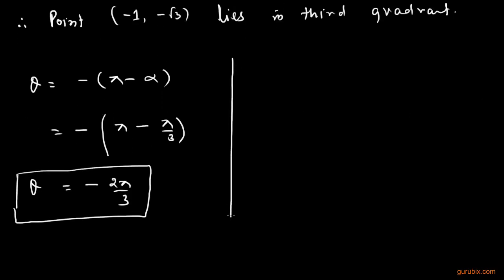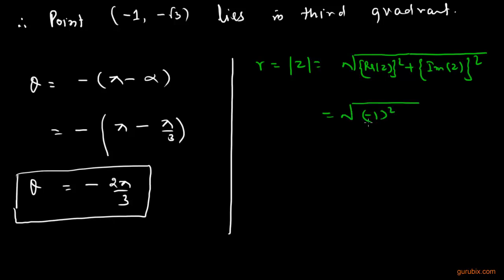Now we shall calculate the modulus of the given complex number, which we denote by small r. That equals the square root of sum of squares of the real part and imaginary part. This means square root of minus 1 squared plus minus square root 3 squared, which equals 2.